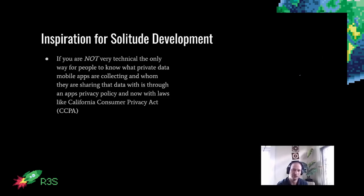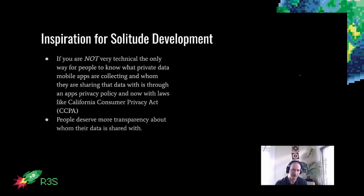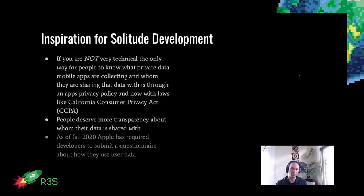The only way you can get transparency is if you read a privacy policy — which are mostly unreadable — or take advantage of laws such as CCPA, the California Consumer Privacy Act, to request access to your data. However, as we saw with my previous research, we still don't know if this is the actual truth of what's happening. The only real way to inspect this is if you do an investigation into the app yourself, which is difficult if you don't have the technical knowledge. So the goal was to develop a tool to give people more transparency.